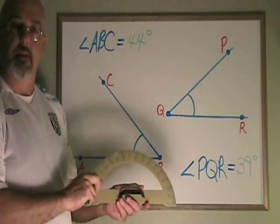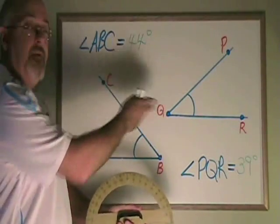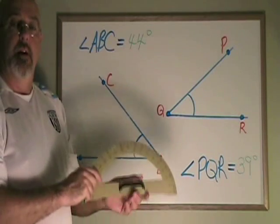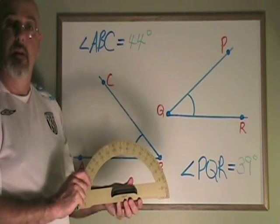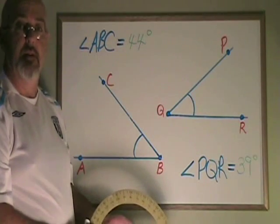Once you know that there are two sets of numbers, and you know the two different situations when you use them, protractors are no longer confusing, and measuring angles becomes very, very simple.